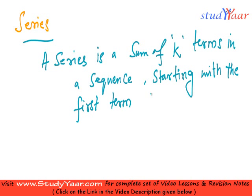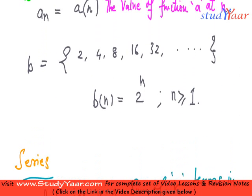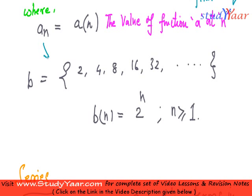So in the example that we have just seen over here, a series represented by s3 would be sum of first three terms. So it is going to be 2 plus 4 plus 8 which is equal to what? It is equal to 14.